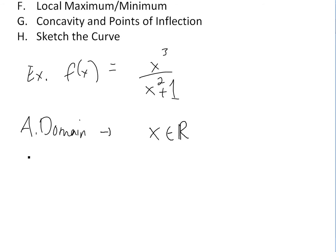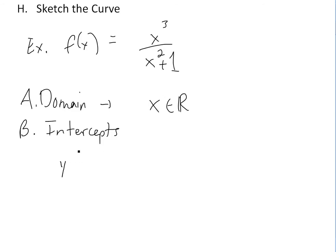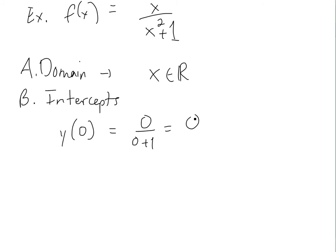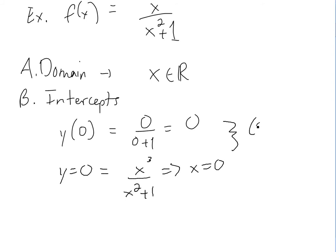For part B, the intercepts: to get the y-intercept, set x equal to zero — you get zero over one, which is zero. For the x-intercept, set y equal to zero: x³ divided by x² + 1 equals zero, and multiplying both sides by x² + 1 gives x equals zero. So the intercepts are both at the origin, zero-zero.